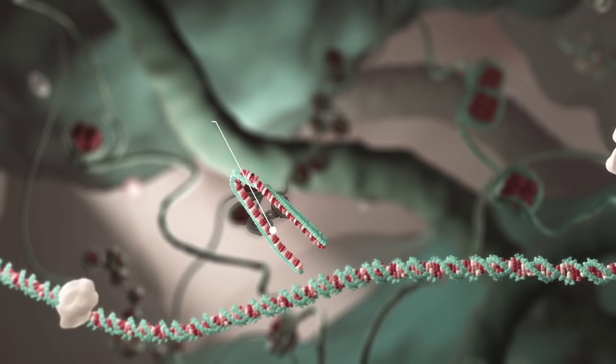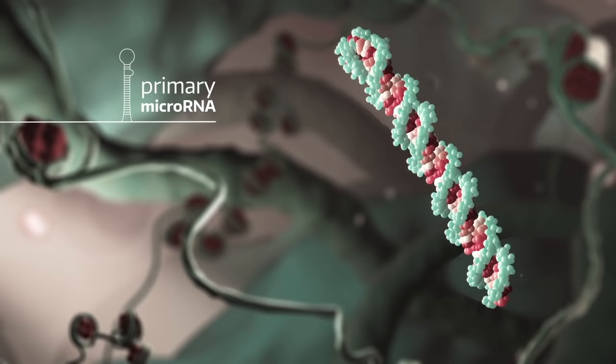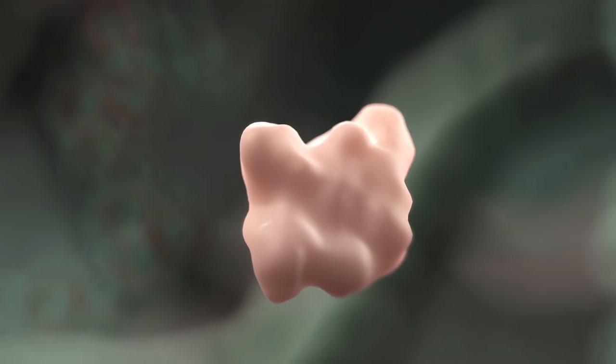In this case, the transcript is a primary microRNA, which forms a typical hairpin loop structure. It will become the final microRNA with regulatory function after several steps of processing.